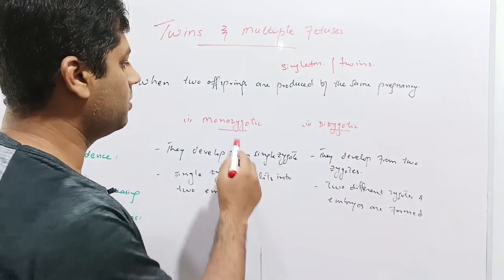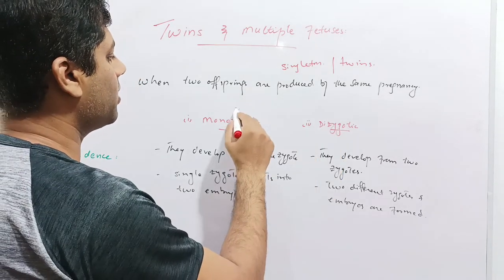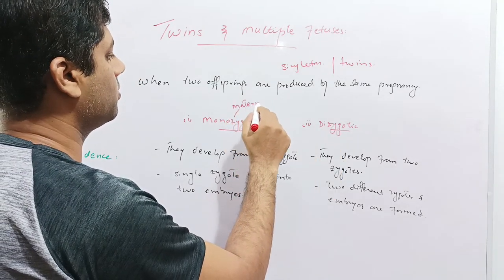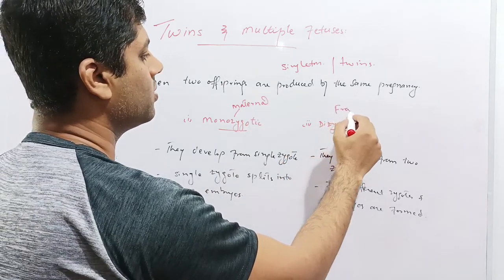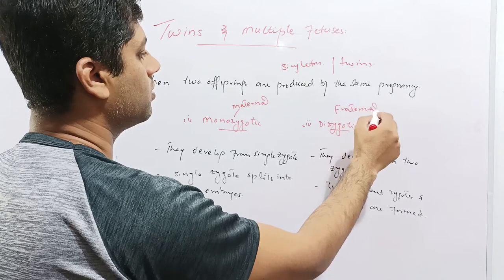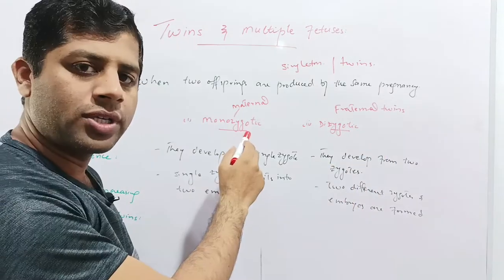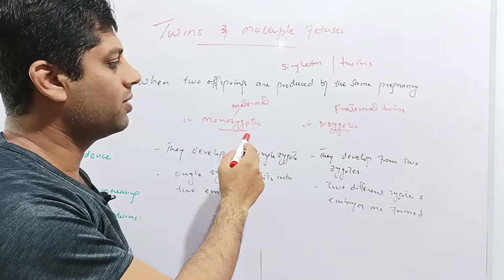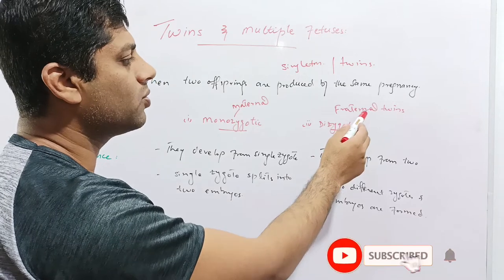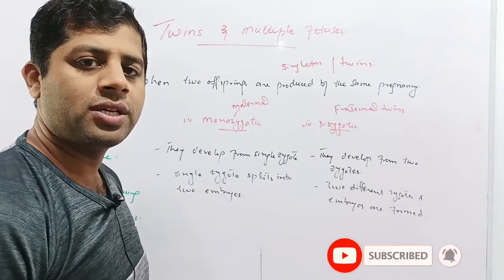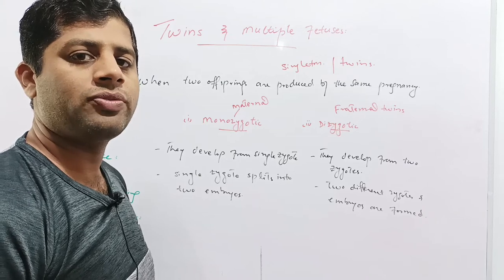Basically there are two types of twins: the monozygotic and dizygotic. The monozygotic twins are also called maternal twins, while the dizygotic twins are called fraternal twins. Maternal twins are always identical and have the same shape as well as the same sex. In case of dizygotic twins, these are non-identical, are different from each other, and sometimes the sex is also different.